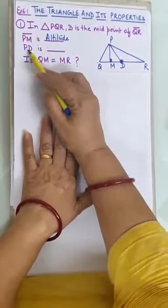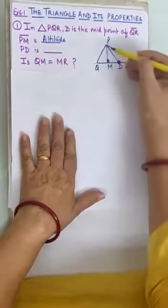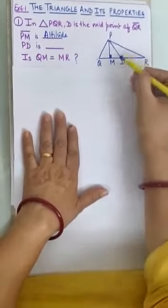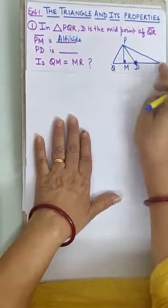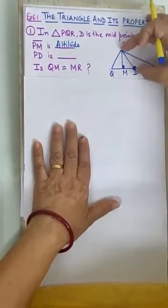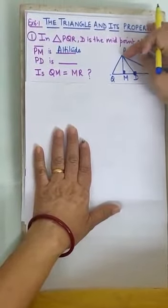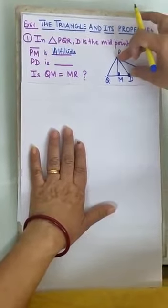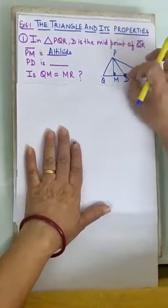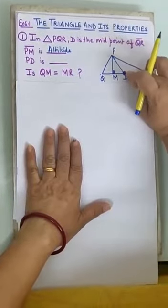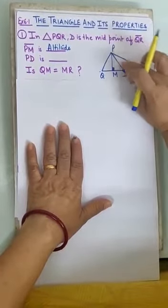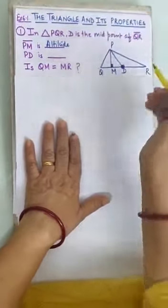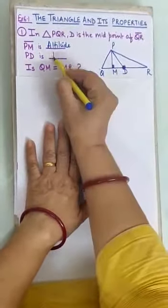Then it is asked: what is PD? D was the midpoint of QR, so PD means the line joining the vertex and the midpoint of the opposite side. So PD is the median.